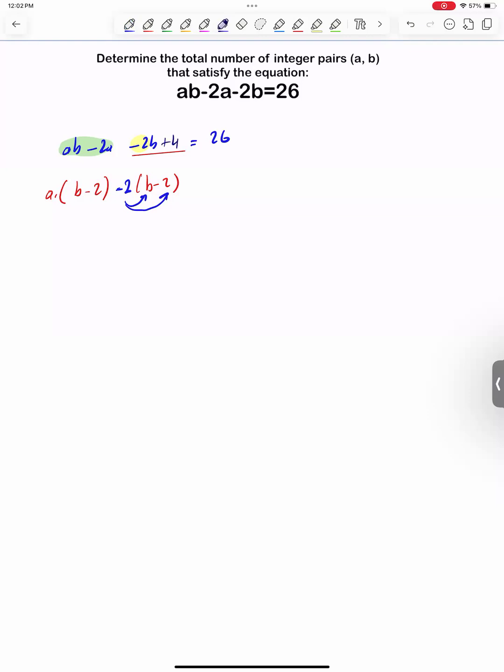We need 4 here. I add 4. I have to add 4 to the other side, so nothing changes. Now, the equation equals 26 plus 4, which is 30.